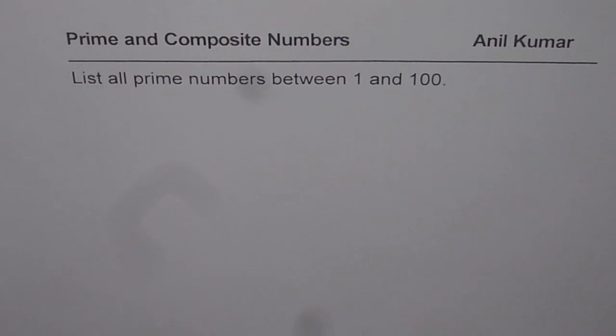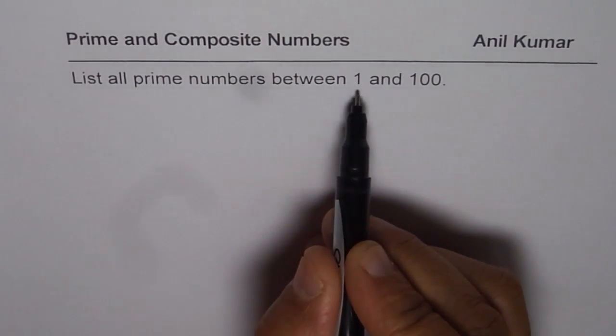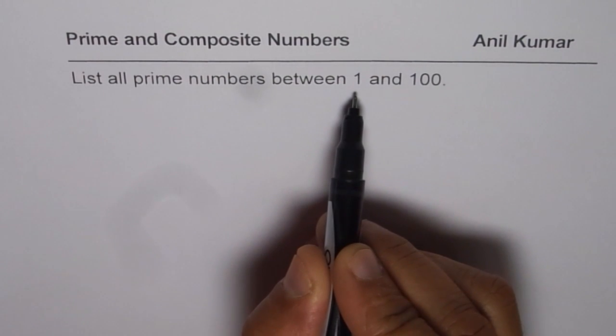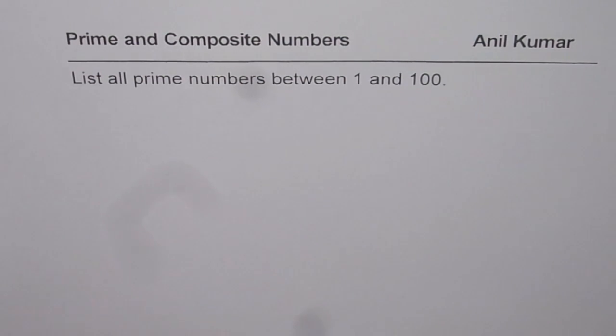I'll give you some of the prime numbers here, so we can begin with number 1 itself. As you know, number 1 has only one factor and therefore it is not prime. So 1 is not a prime number. Do not include 1 in your list. It is neither prime nor a composite number.